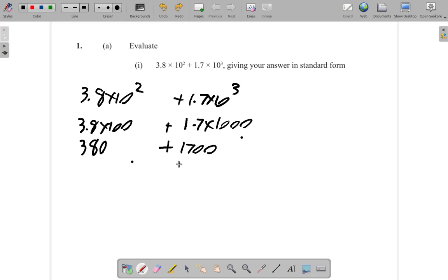So you have 1700 plus 380. Zero plus zero is zero, 8 plus zero is 8, 7 plus 3 is 10, so bring down the zero, carry one. One and one is two, so it's 2080.